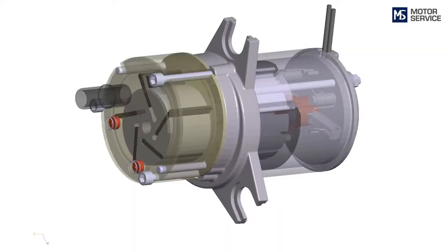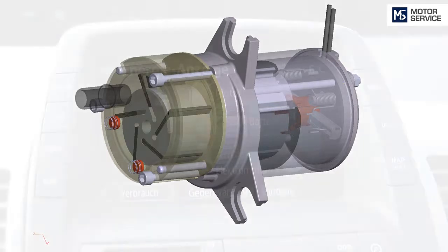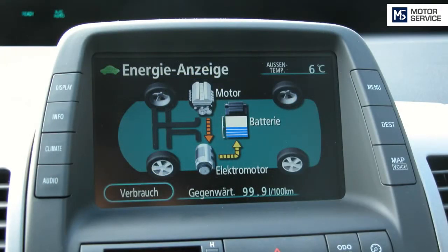Future developments, especially where alternative drive systems are concerned, are increasingly in favor of electric vacuum pumps. They can be switched independently of the vehicle engine and on demand. In hybrid vehicles, they maintain braking assistance when the engine is off.